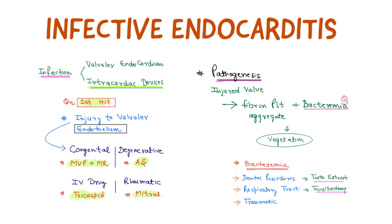An MCQ may ask what is the first hit in the pathogenesis of infective endocarditis — the answer is injury to valvular endocardium. The etiology may be from congenital causes like mitral valve prolapse and mitral regurgitation, degenerative causes like aortic stenosis, IV drug abusers (especially the tricuspid valve), and rheumatic causes (especially the mitral valve).